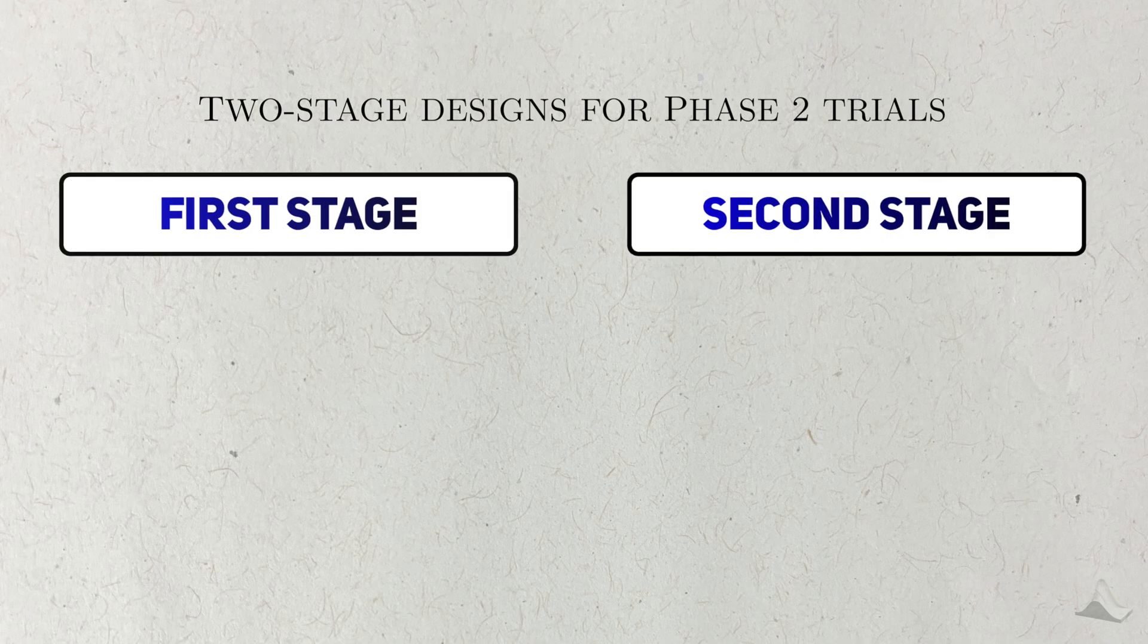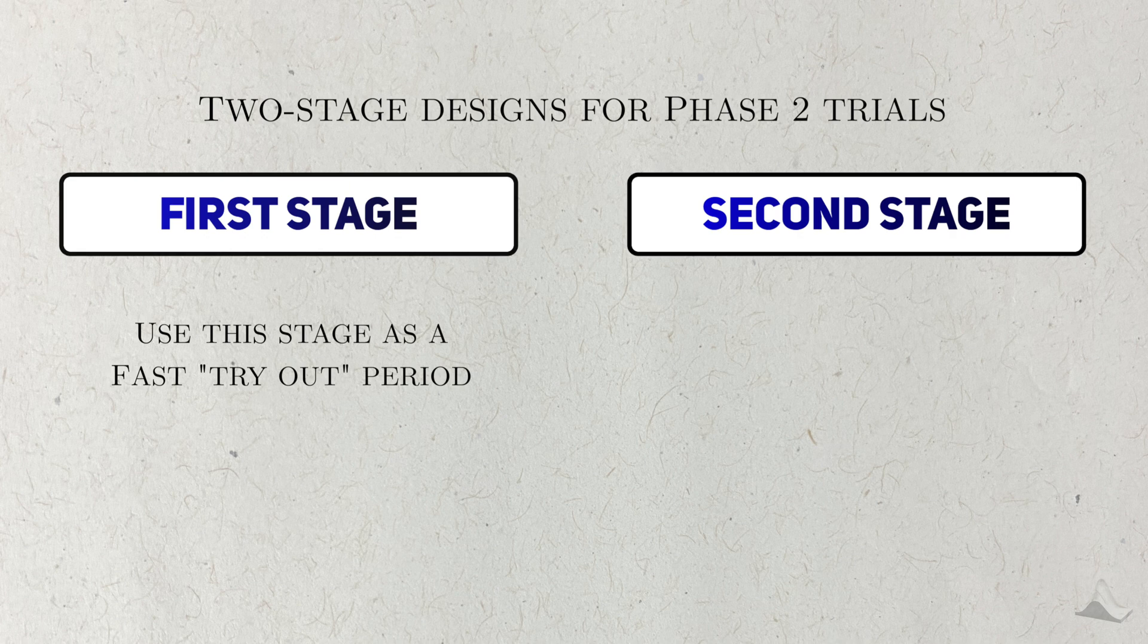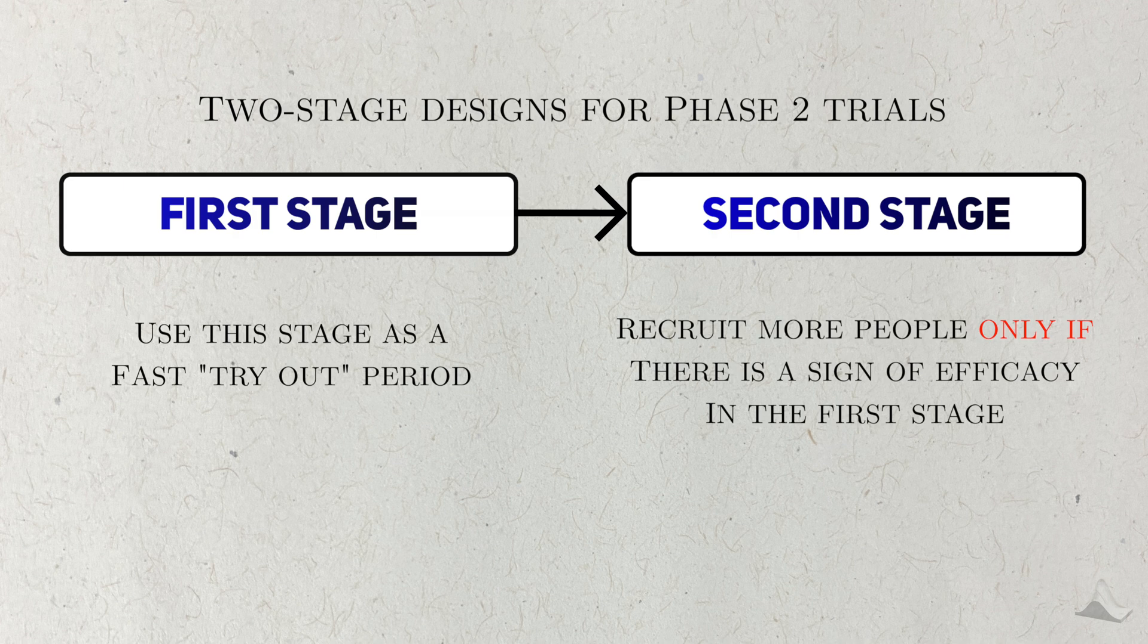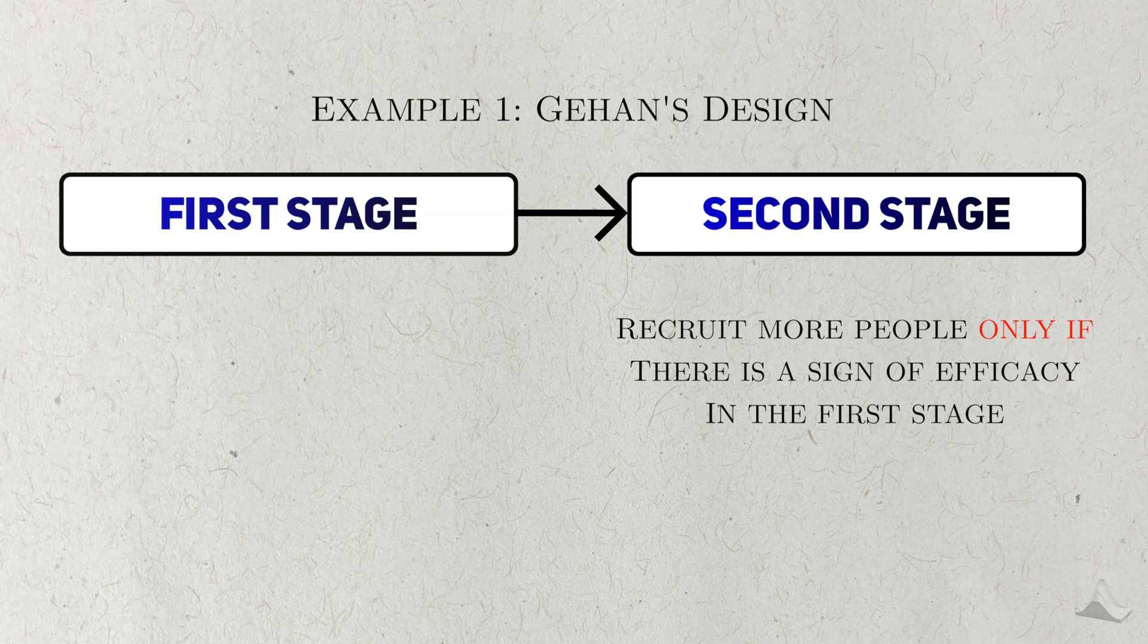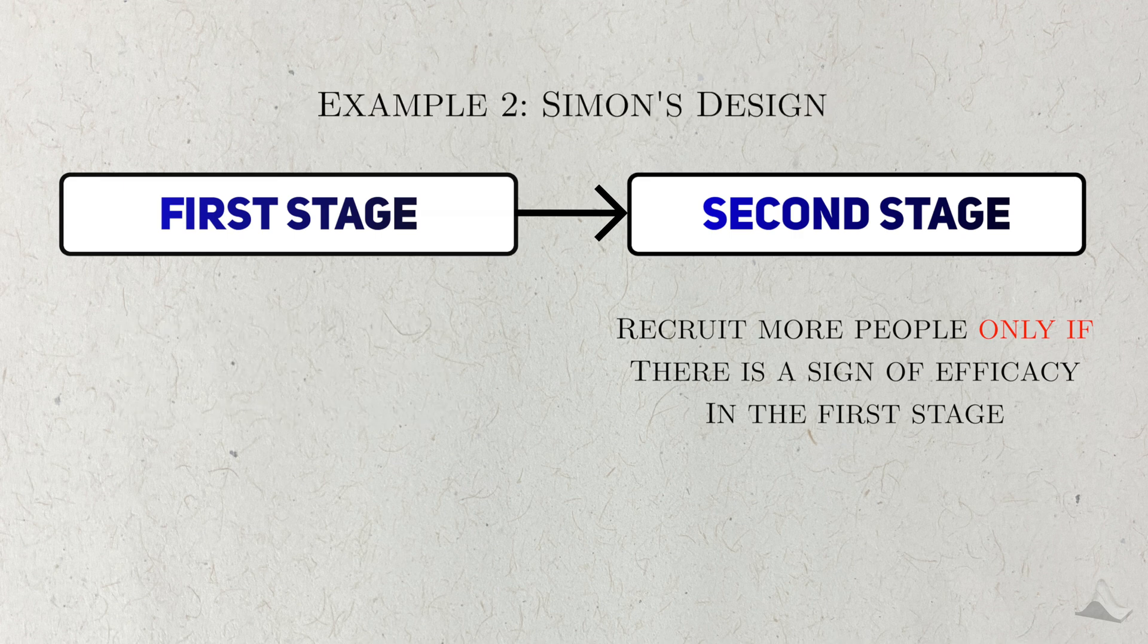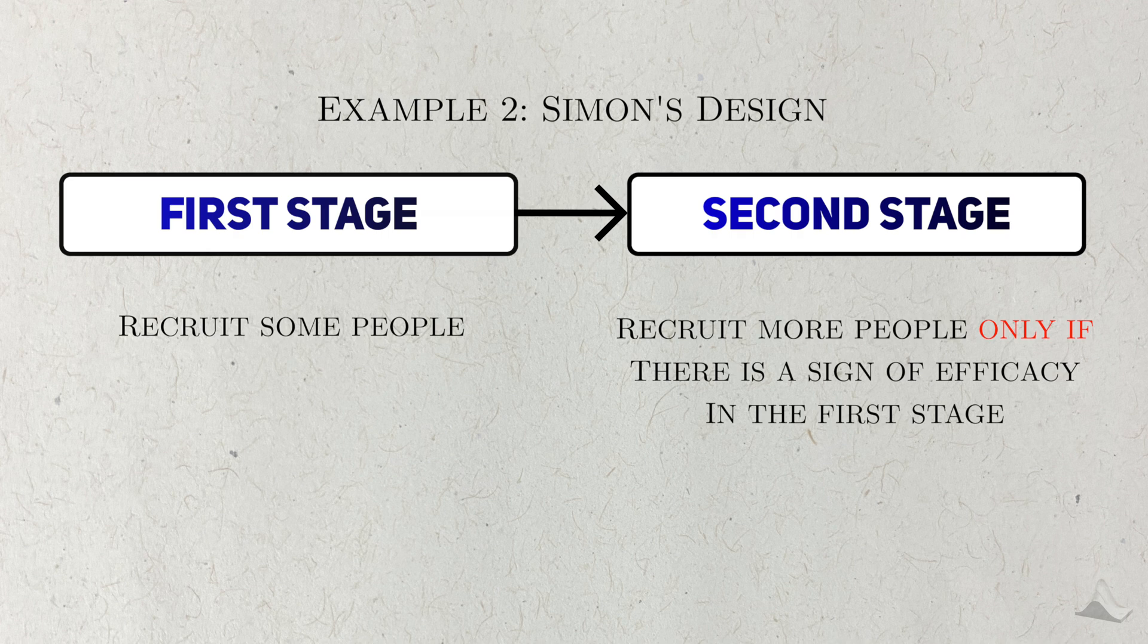The idea behind a two-stage design is to use the first stage as a sort of tryout period. The design is planned to go to the second stage only if an adequate number of successes are seen in the first stage. One example is Gehan's design, named after some guy named Gehan. This design only goes to the second stage if it sees at least one person respond to treatment. There's another popular design called Simon's design, named after some guy named Richard. In Simon's design, you only pass the first stage if some minimum number of people respond.